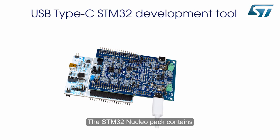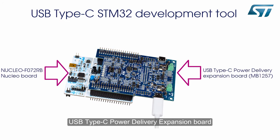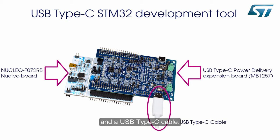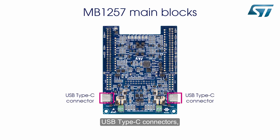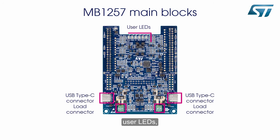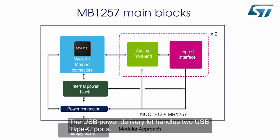The STM32 NucleoPack contains an STM32 Nucleo Board, a USB Type-C Power Delivery Expansion Board, and a USB Type-C cable. The expansion board's main blocks are USB Type-C connectors, load connectors, user LEDs, and morpho connectors. The USB Power Delivery Kit handles two USB Type-C ports.